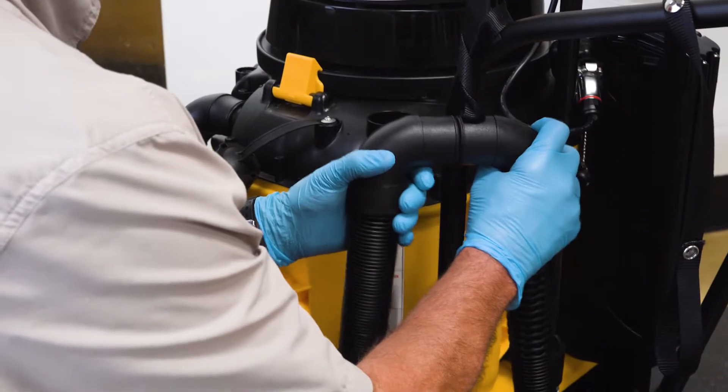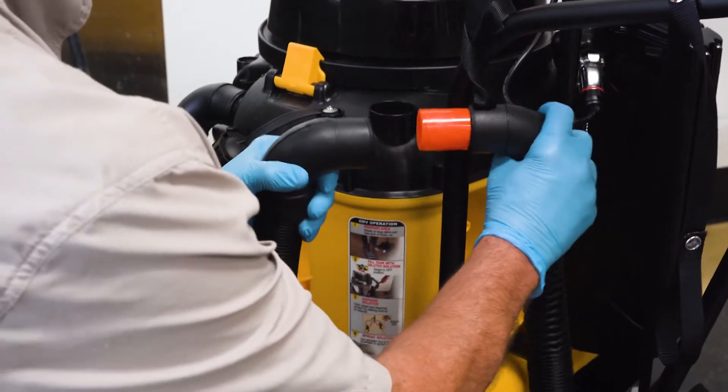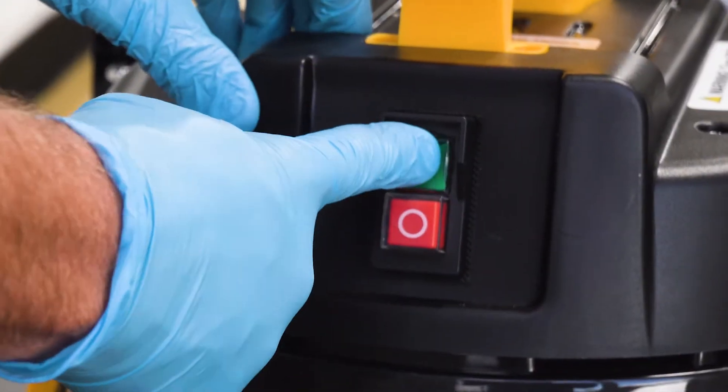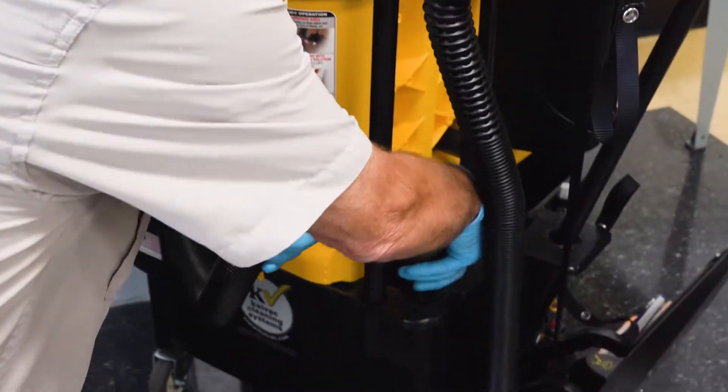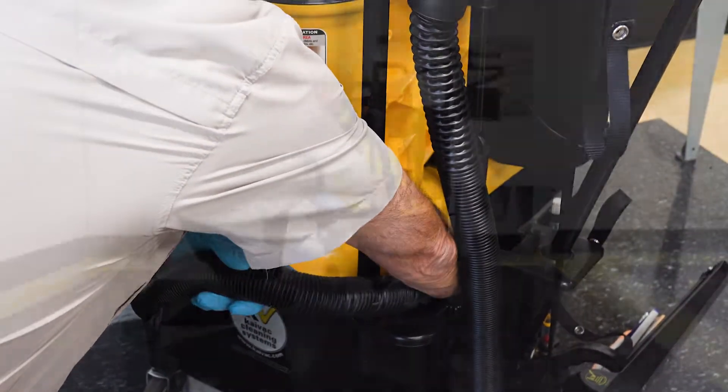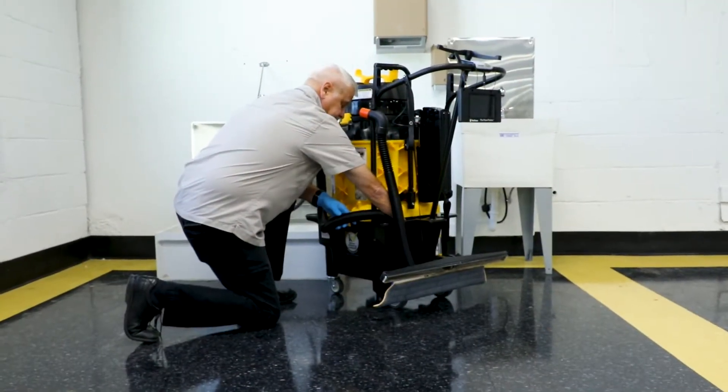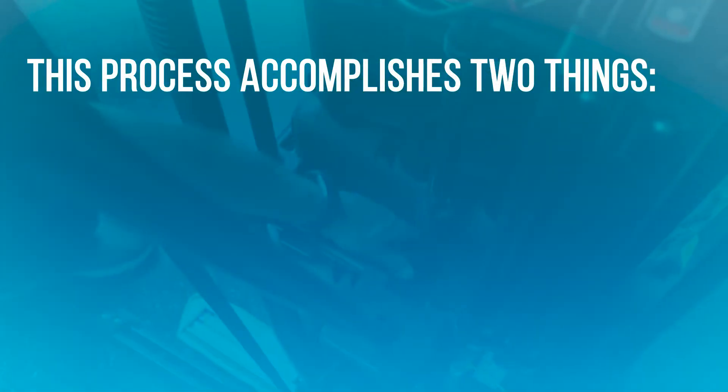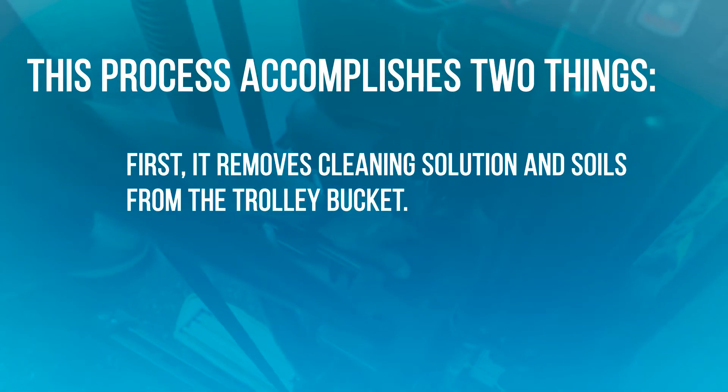Now disconnect the vacuum hose from the cuff on the side of the vacuum tank. Turn on the vacuum motor and use the vacuum hose to remove any cleaning solution from the trolley bucket. This process accomplishes two things. First, it reduces cleaning solution and soils from the trolley bucket.